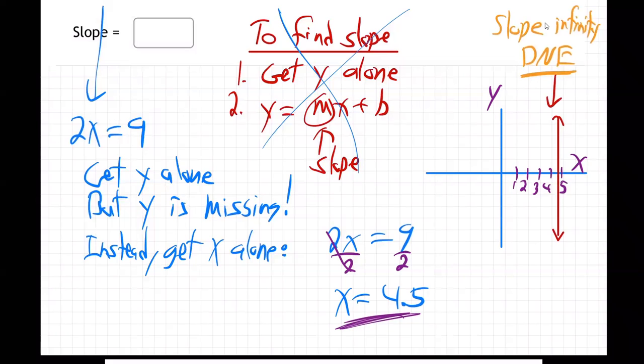It's like a cliff, right? So that's our answer here: DNE. It does not exist because whenever y is missing, that means you just have x, which means your line only goes through the x-axis at whatever you solve for x, 4.5.